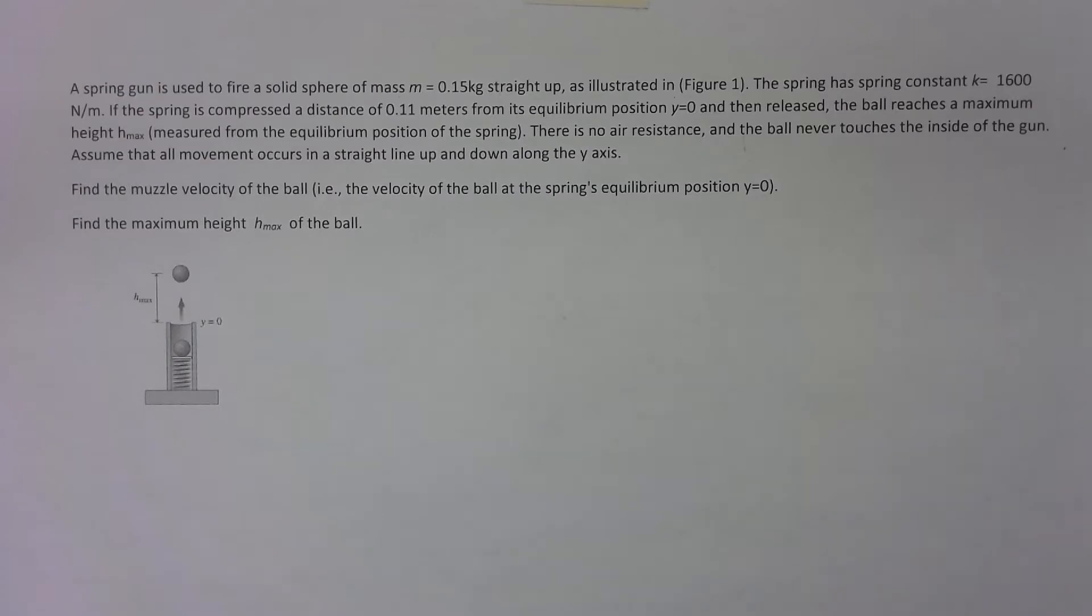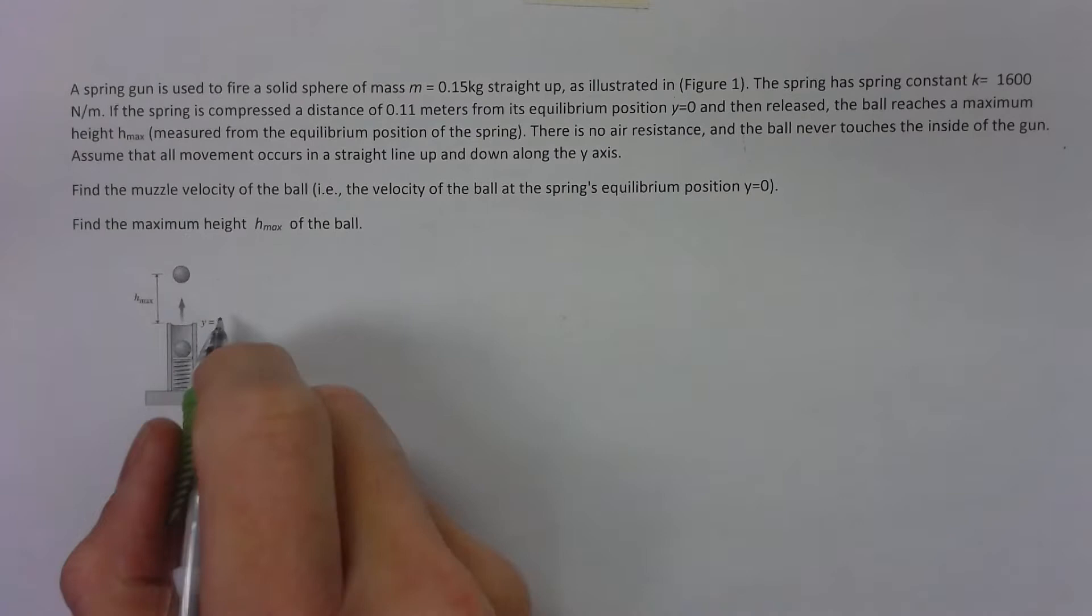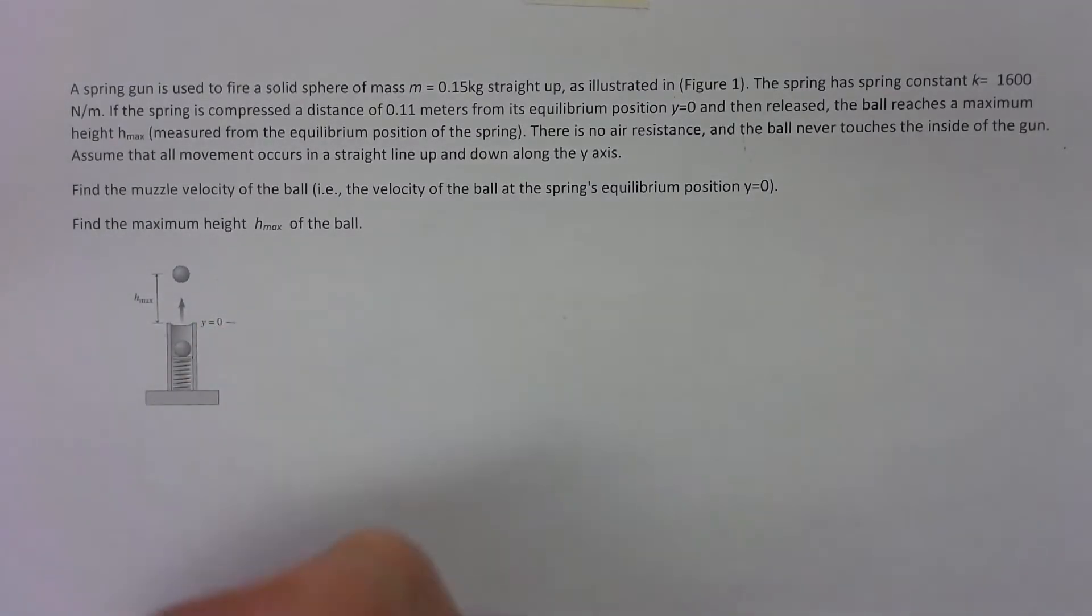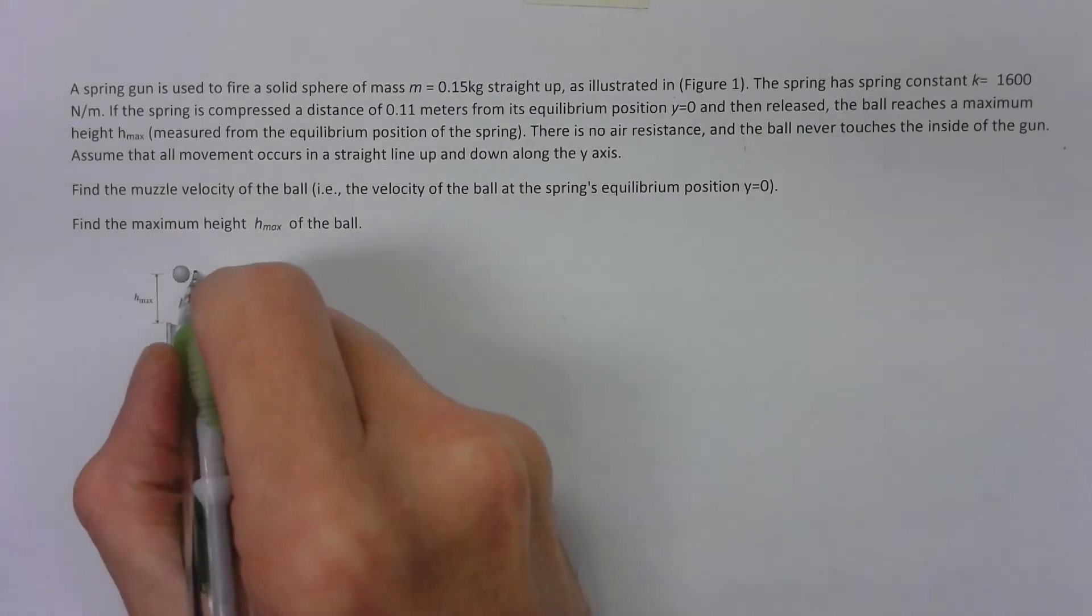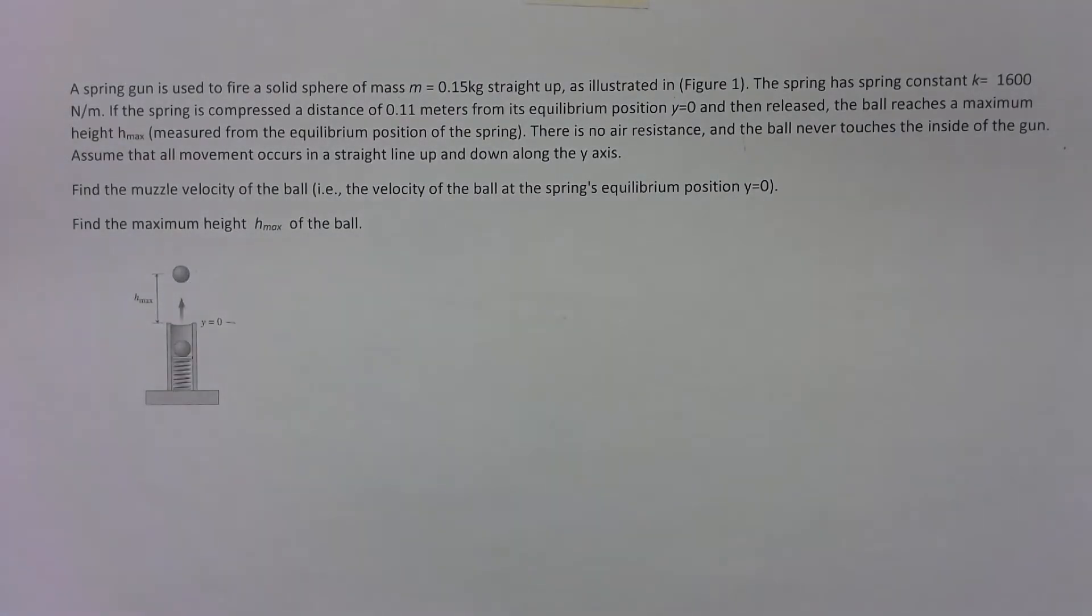The spring is compressed 0.11 meters from equilibrium, then released. The ball reaches a maximum height h_max above the equilibrium position. There's no air resistance, it never touches the side of the gun, and all movement occurs in a straight line up and down, which makes it pretty simple.